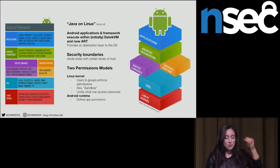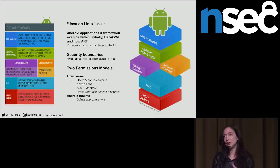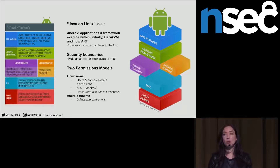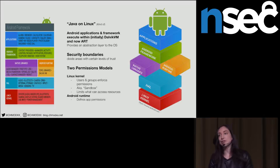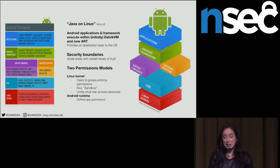Security boundaries basically divide levels of trust — dividing kernel space from user space. Code in kernel space is trusted to perform low-level operations you wouldn't want users or applications to access, because malicious apps can do really scary things if they have operating system-level abilities.